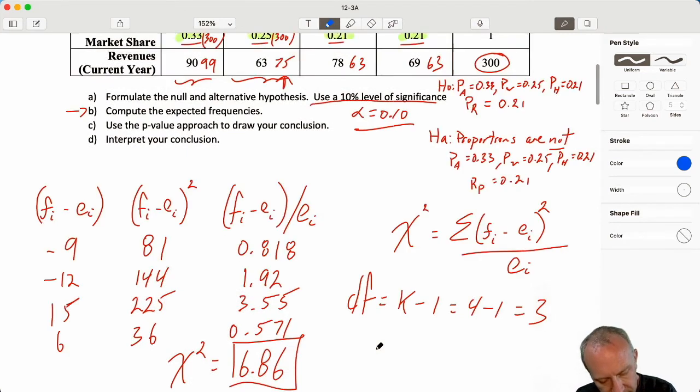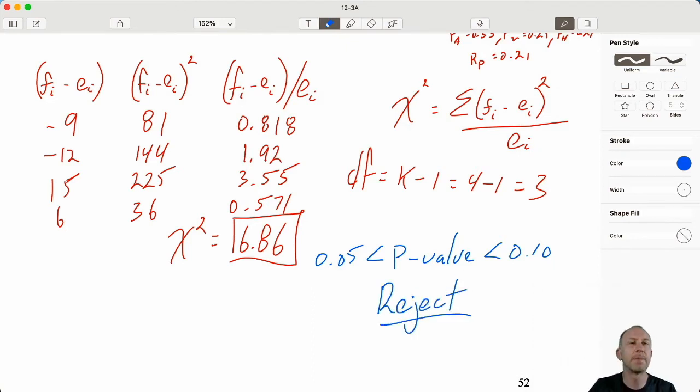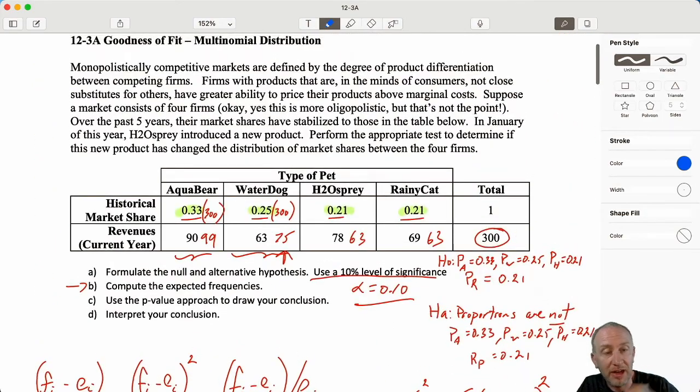So my test statistic here, or my result, my p-value is less than 0.1, greater than 0.05. Using either approach, p-value, critical value approach, we should always get to the same conclusion. We have sufficient evidence here to reject the null hypothesis. What does that mean? The introduction of this new product has, in fact, changed that distribution of market shares among these four firms.